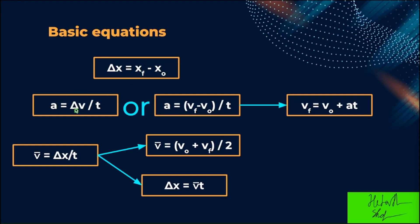And we can see that here with the acceleration equation. Acceleration equals delta v over t, which can also be written as acceleration equals final velocity minus initial velocity over t.